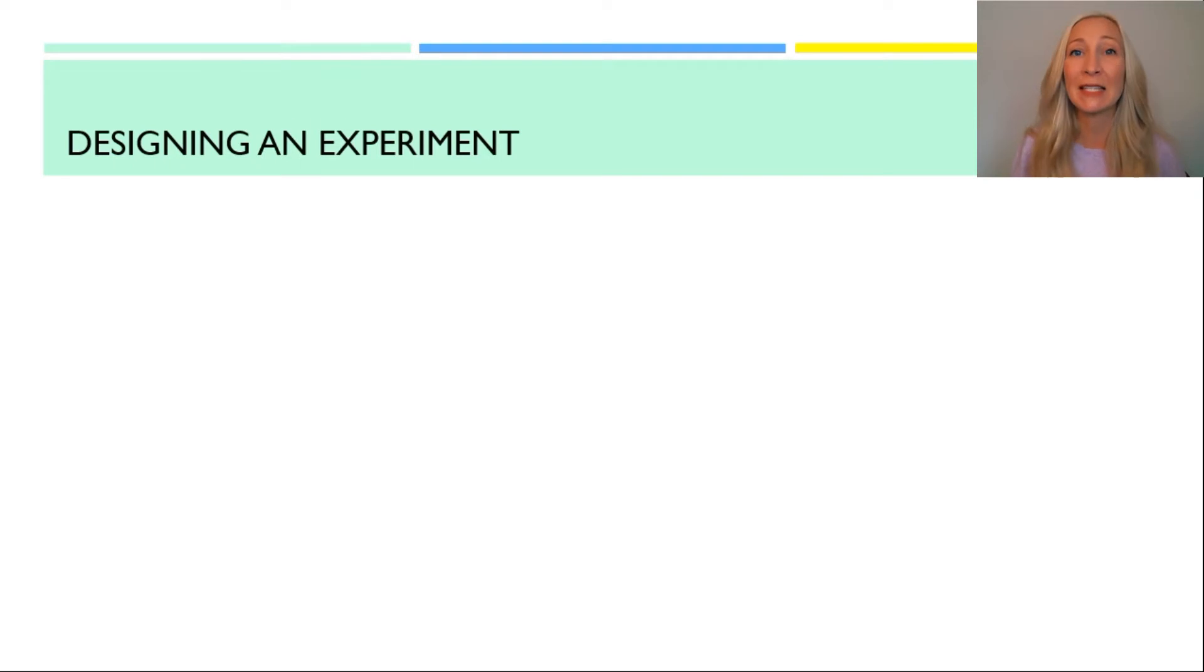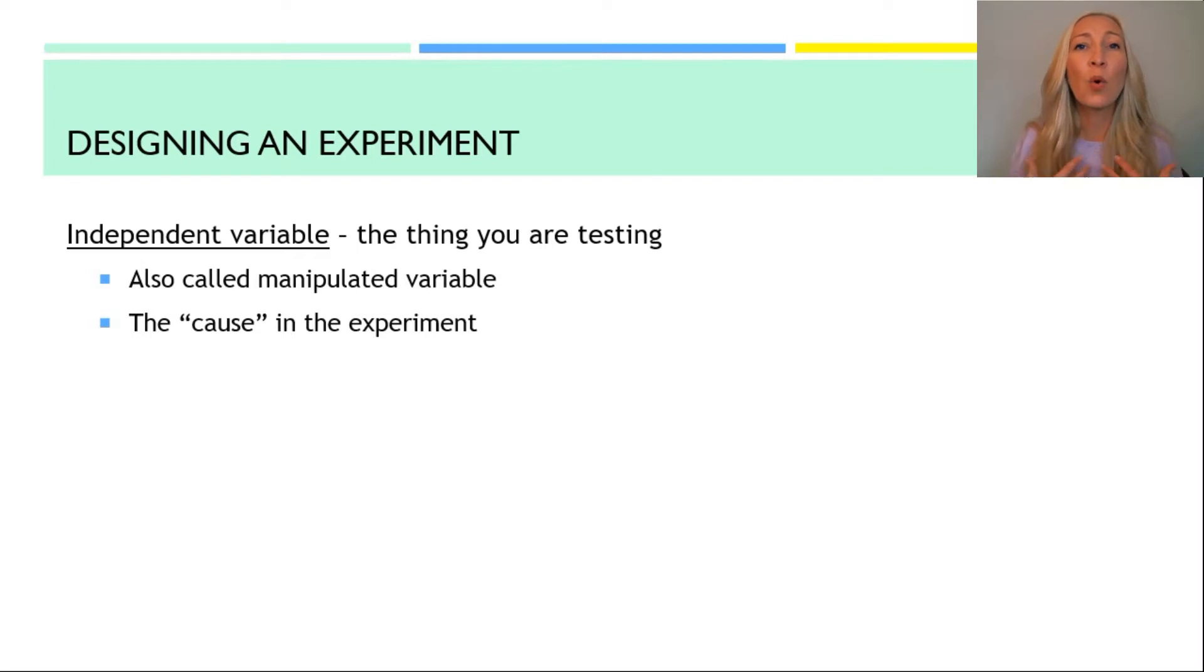The first vocabulary term is the independent variable. This is the thing that you are testing. You are in control of it. It is sometimes called the manipulated variable, but I like to think of it as the cause. What do I do to the experiment? A well-designed experiment should only have one independent variable. The reason is because you want to know that that one thing was the cause of whatever happened down the line. If you design an experiment where you are changing multiple things, then you don't know which of those things caused that effect.